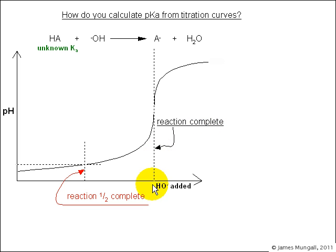Now if we look at the point when the reaction was only half complete, in other words when only half the neutralizing hydroxide had been added, this would be a point at which the amount of HA is the same as the amount of A minus, because half of it's reacted with the hydroxide and half of it remains unreacted.